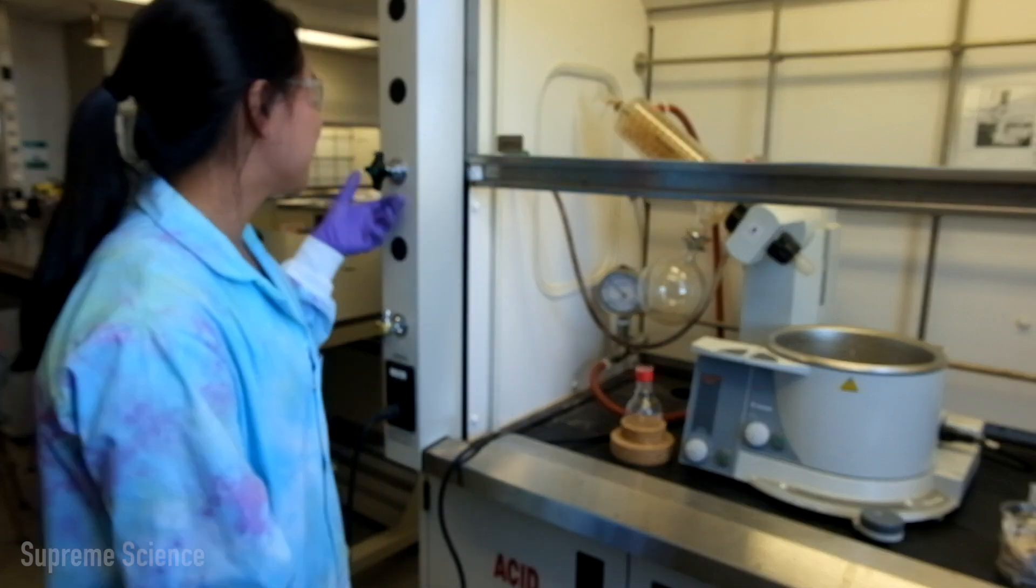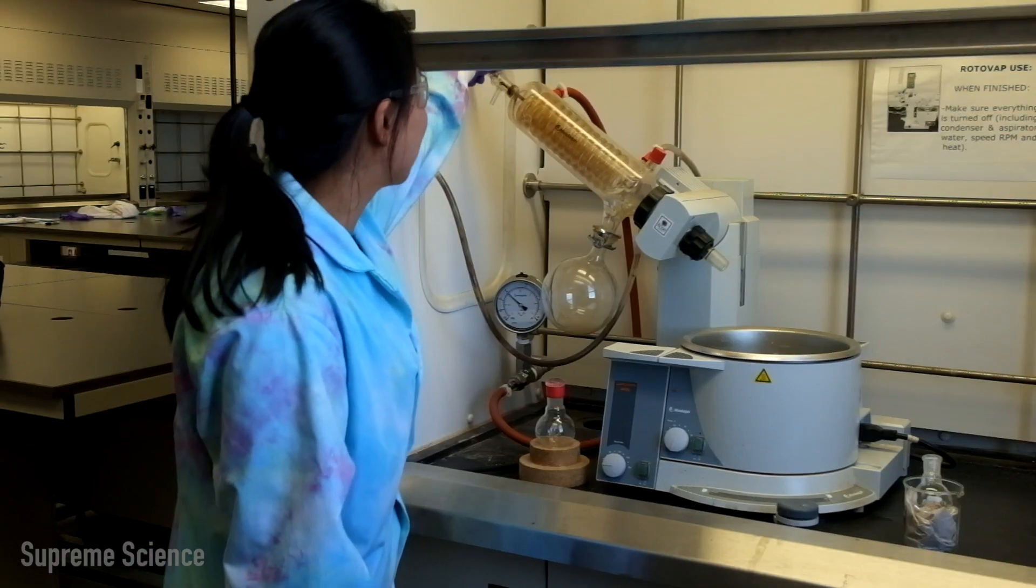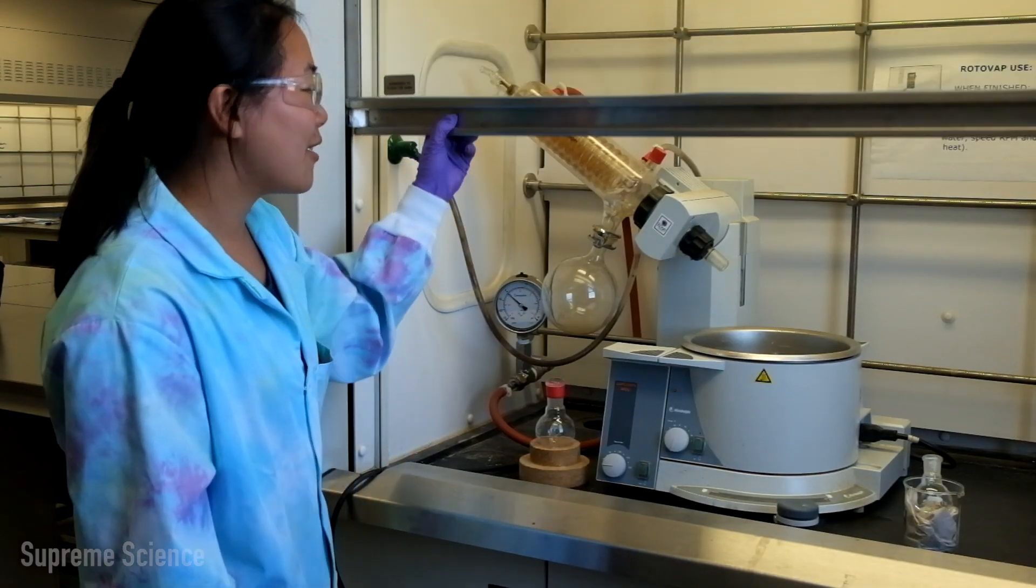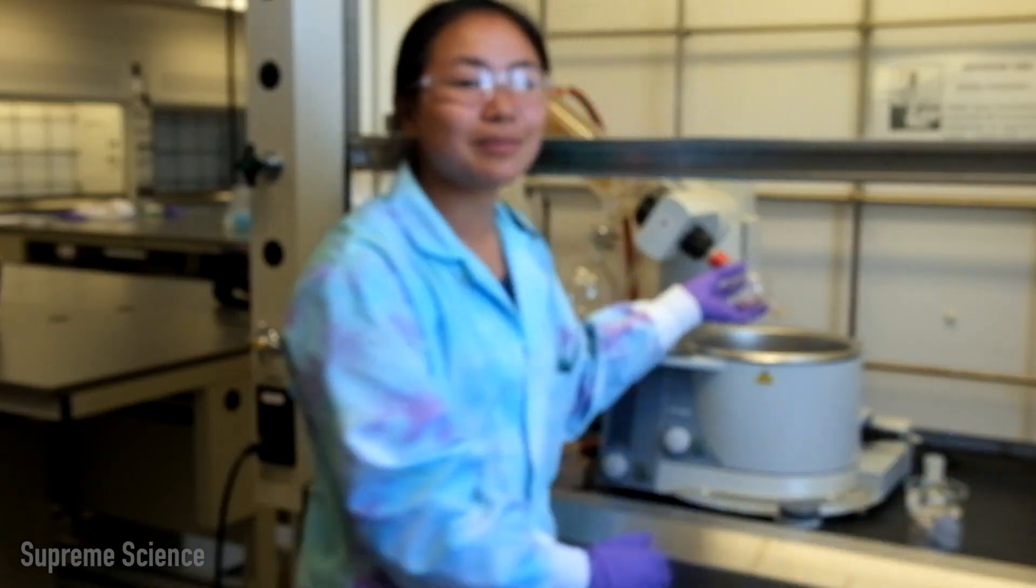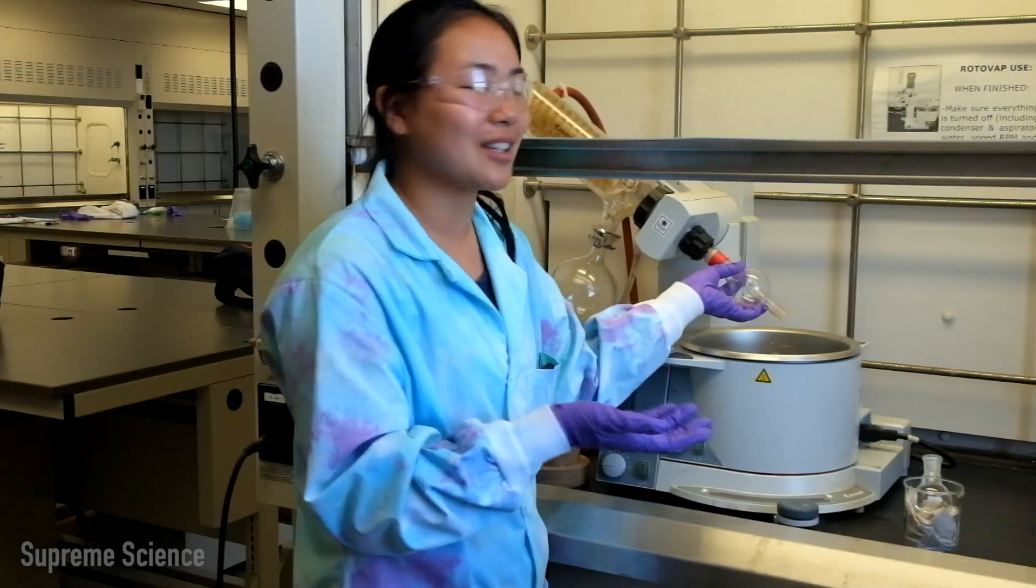The first thing you want to do is turn your cold water on gently. Close your stopcock at the top of the condenser. And then you can take your splash trap and put it here. And you want to hold it because there's nothing keeping it there right now.